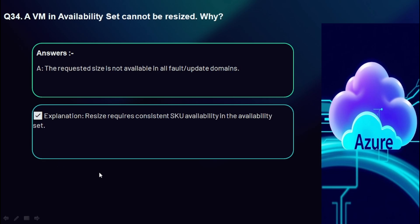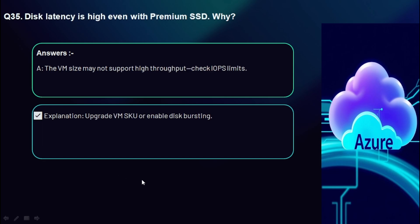Question 34: A VM in an availability set cannot be resized — why? The requested size is not available in all fault and update domains. Azure availability sets are backed by dedicated fault and update domains distributed across a physical hardware cluster. When you try to resize, Azure must find available capacity for the new VM size on the same cluster and within the same availability set to maintain high availability.